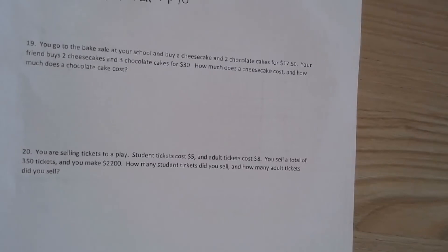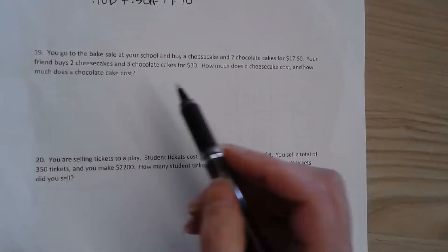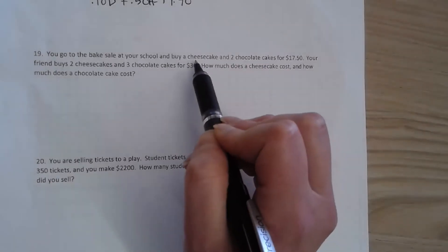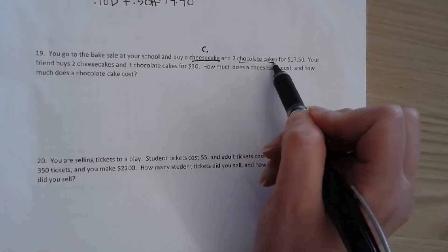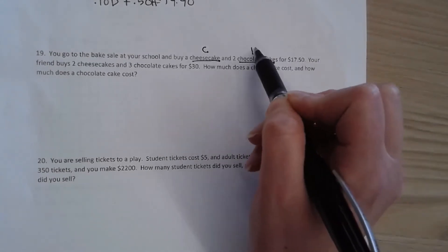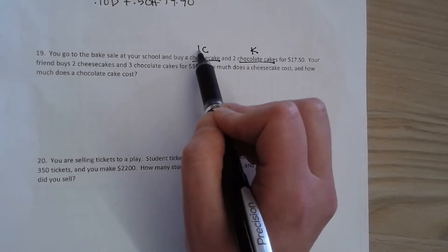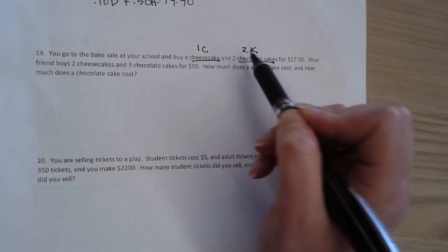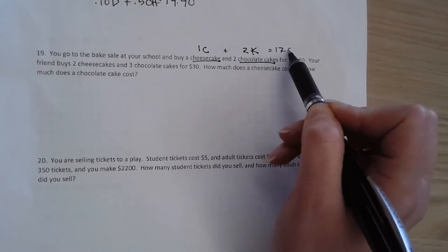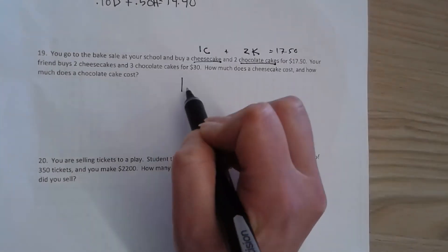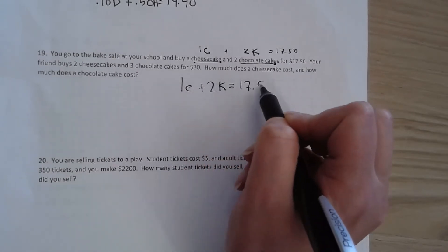19, we are looking at the bake sale. And at this bake sale there are two types of cakes you're buying. You're buying cheesecakes. I'm buying chocolate cakes. I can't use C again so I'm going to use K. So you buy one cheesecake and two chocolate cakes. And that's a total of 17.50 you spent. So one cheesecake plus two chocolate cakes equals 17.50.